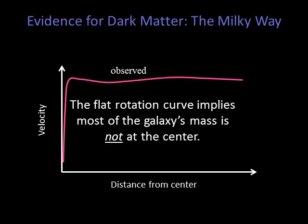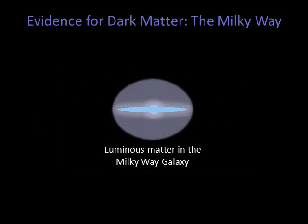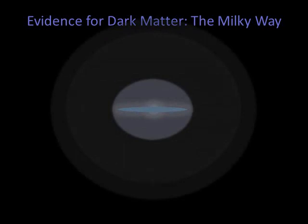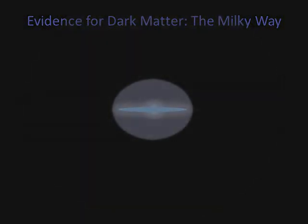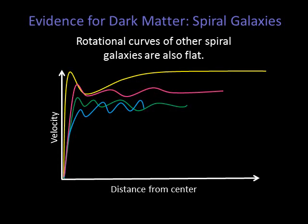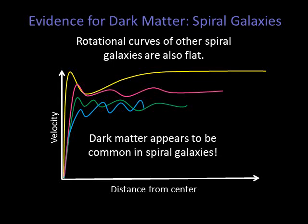The flat rotation curve implies most of the galaxy's mass is not at the center. Where then is the mass? It's in an enormous spherical halo of dark matter, with 10 times the mass of all the stars in the disk. Our Milky Way is not unique when it comes to this distribution of dark matter. Astronomers also observe flat rotation curves in other spiral galaxies, implying that dark matter is common.